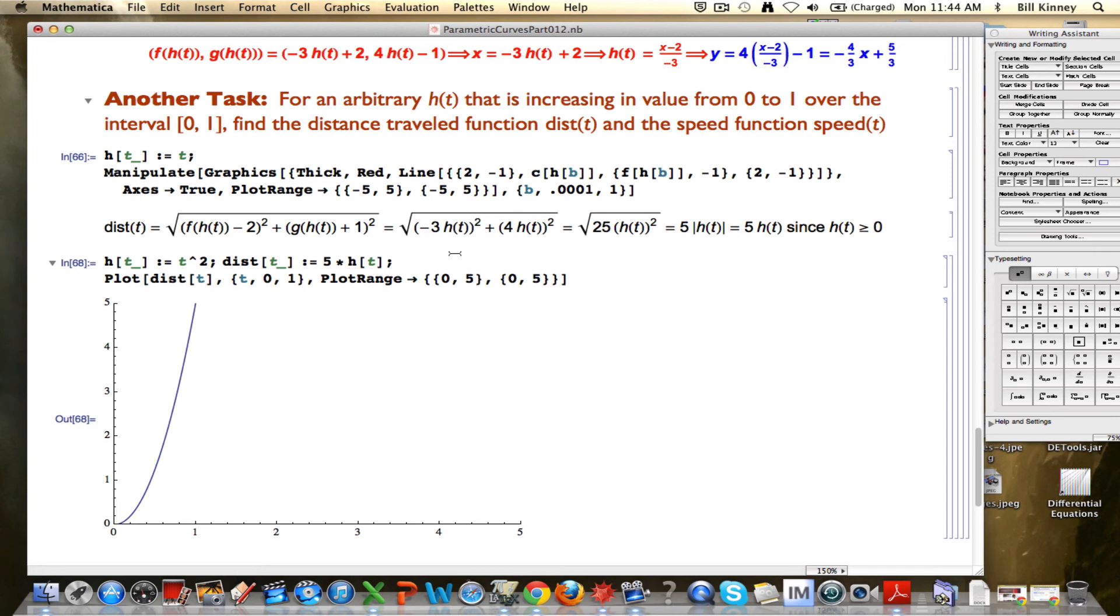In calculus, the speed is found by taking what's called the derivative of the distance traveled function. In calculus and in mathematica, you can calculate that derivative by putting a prime here. Again, my focus is not on rigorously defining the derivative. As it stands for us right now, this is just an operation. It's an operation that, in this kind of setting, is going to give us the speed. It's going to give us a function that starts out low in value and increases to higher values, just like the function dist of t itself does here. But it will be a different function.